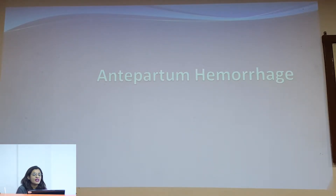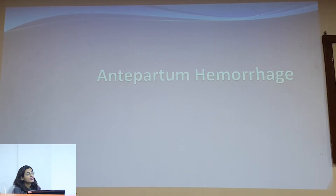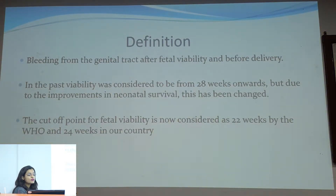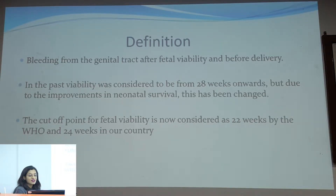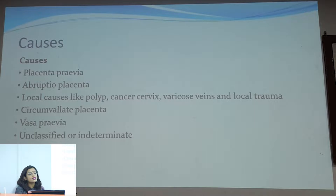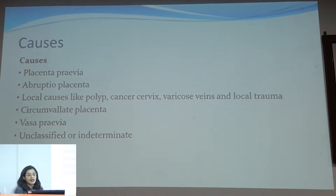What is antepartum hemorrhage? Antepartum hemorrhage is bleeding from the genital tract after fetal viability. Initially, 28 weeks was considered as the fetal viability period, but it has now been changed by WHO to 22 weeks, and in our country, 24 weeks. The common causes of antepartum hemorrhage are placenta previa, abruptio placentae, cervical polyp, cancer cervix, circumvallate placenta, and vasa previa.